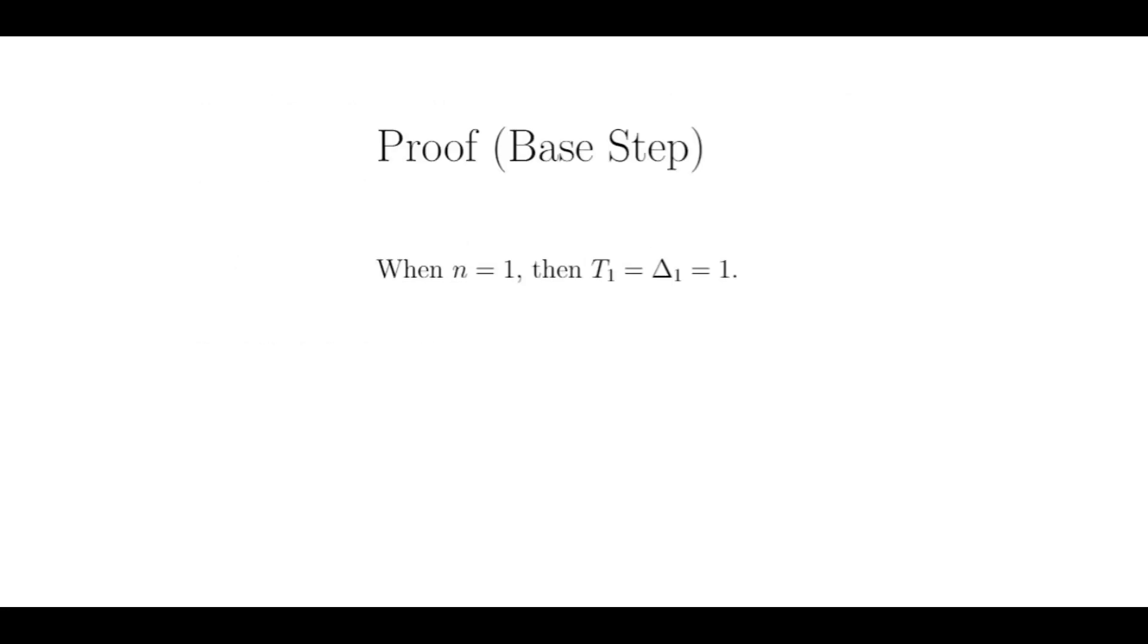So the statement that I want to prove is that for any positive integer n, the nth tetrahedral number t sub n is equal to n times n plus 1 times n plus 2, all divided by 6.